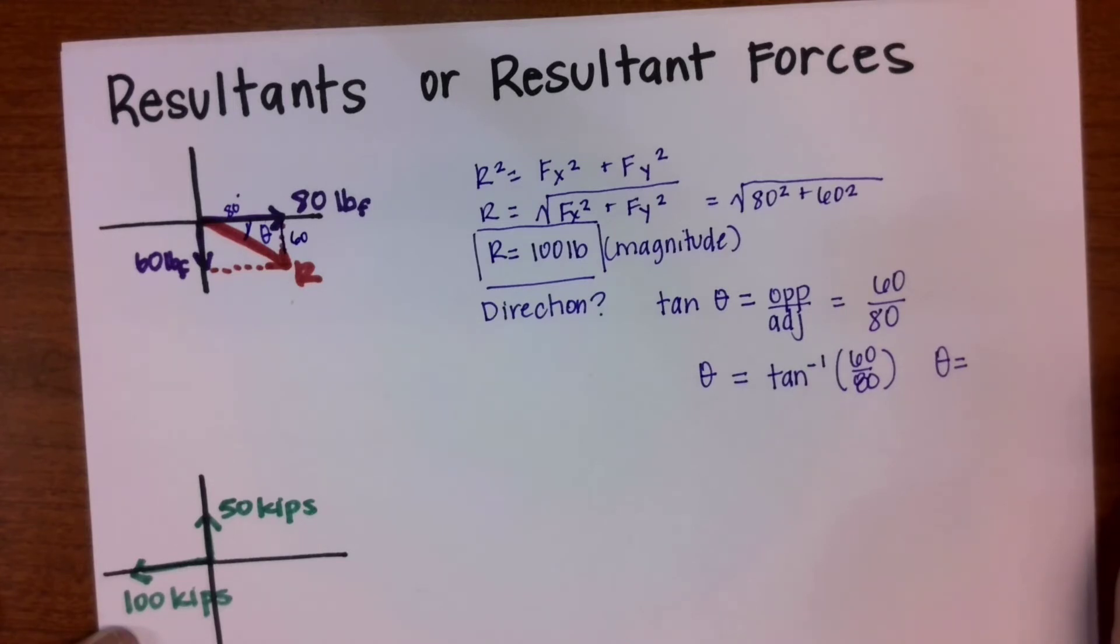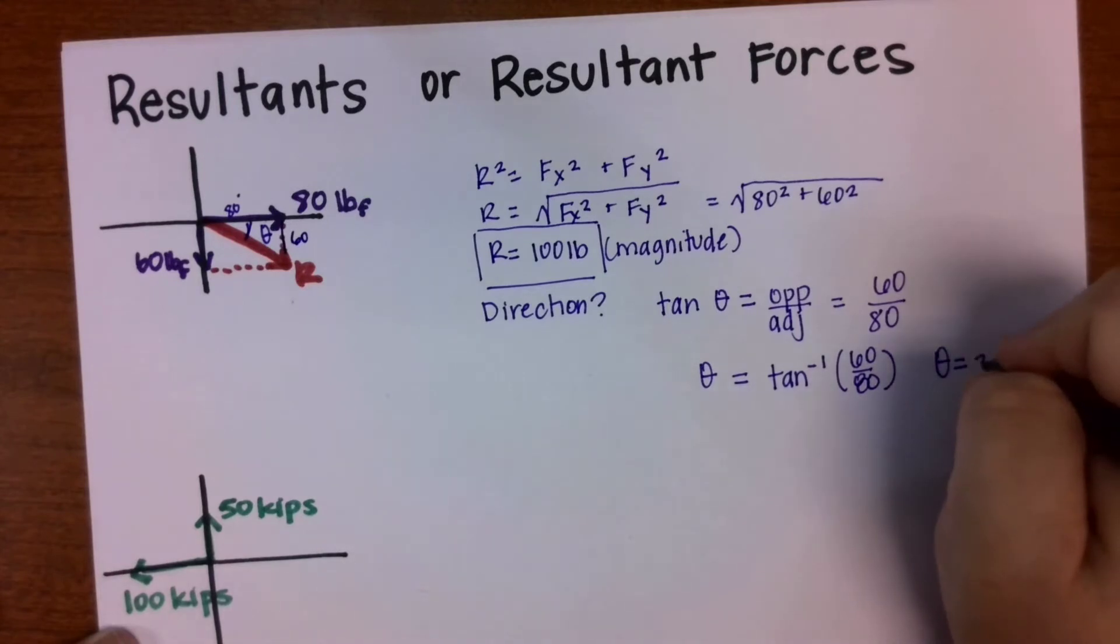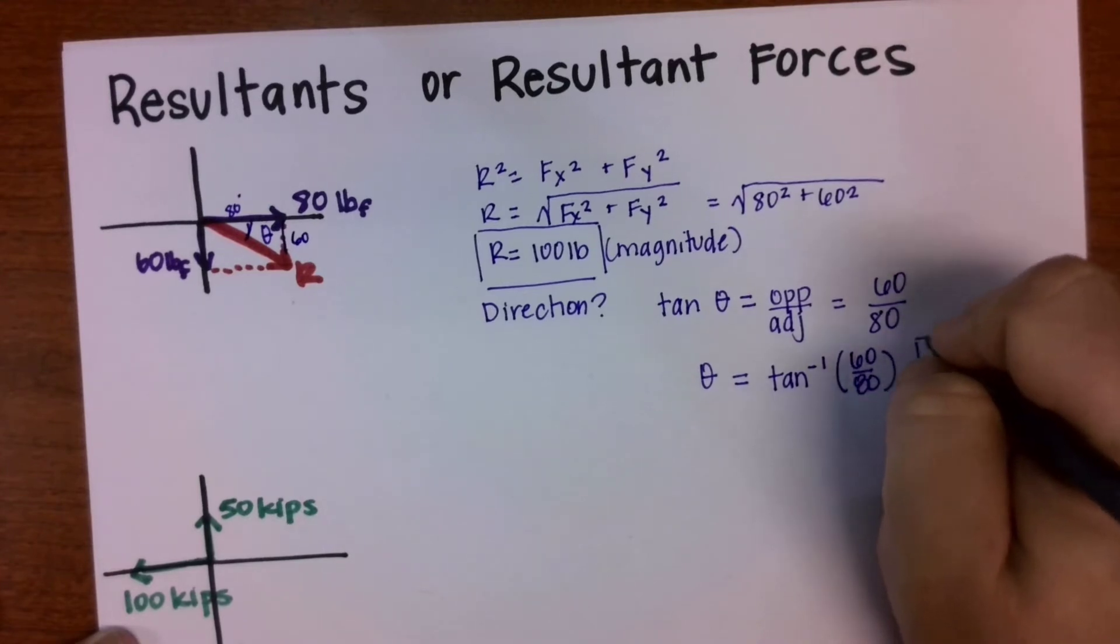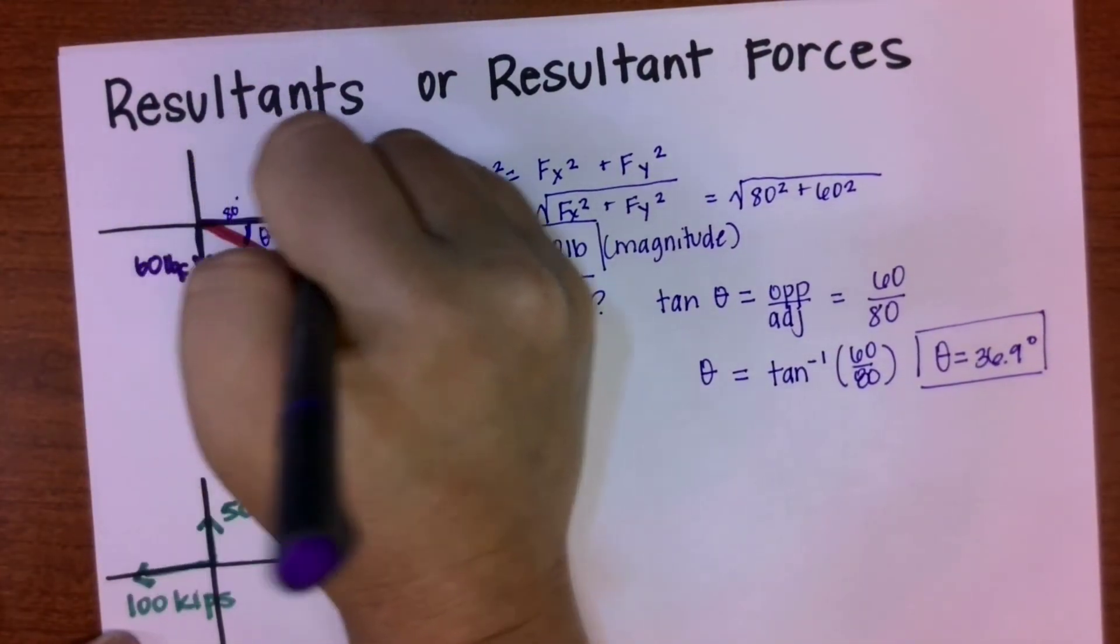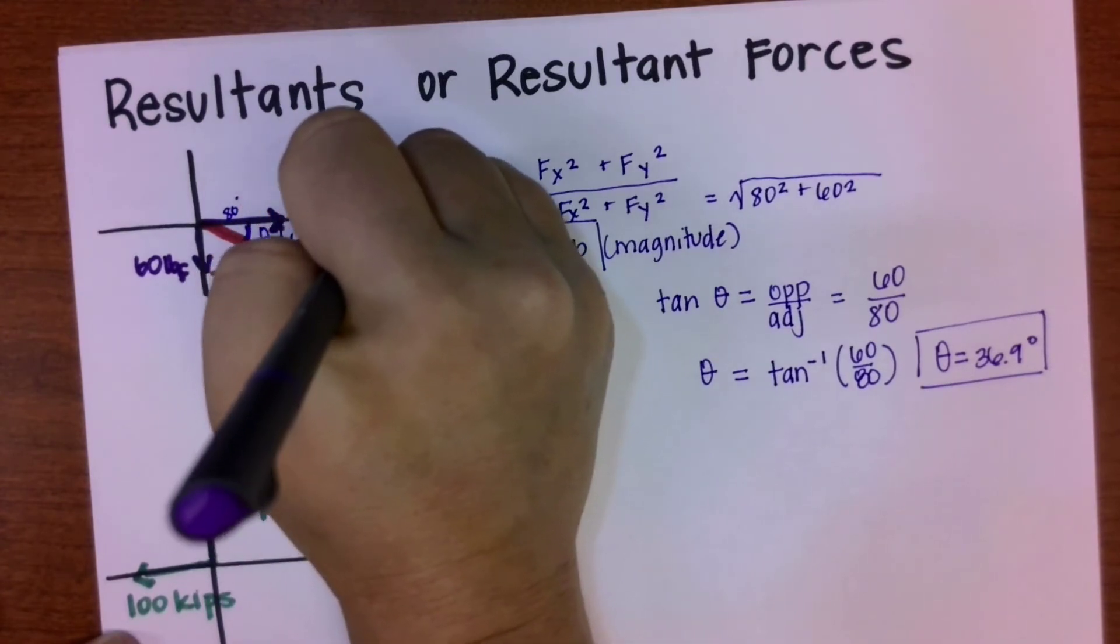So now, once we have that theta, then you've fully defined it, you've given the magnitude and direction. Remember, you have to have those two pieces to fully define it.